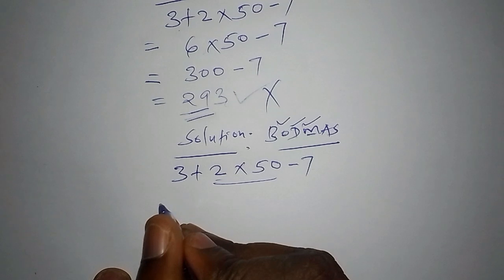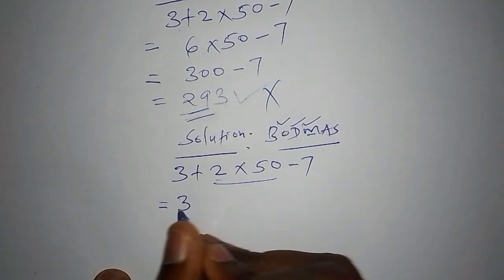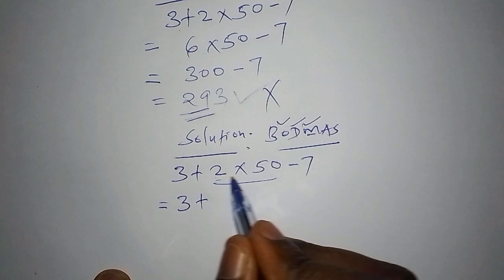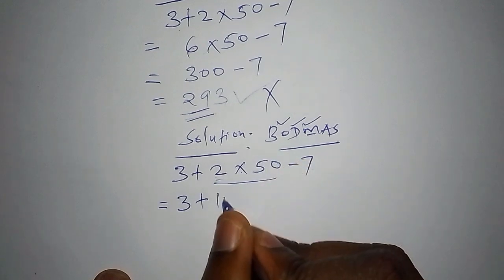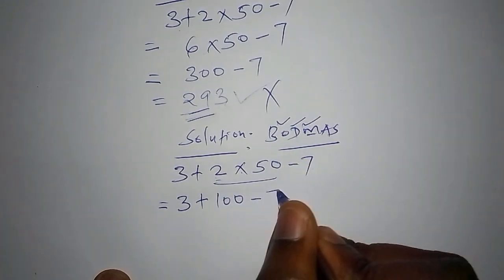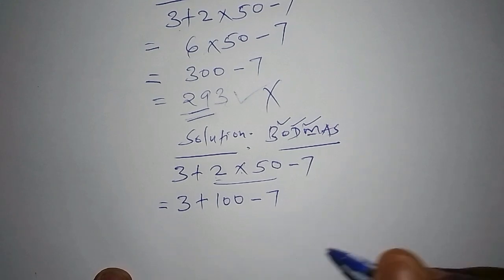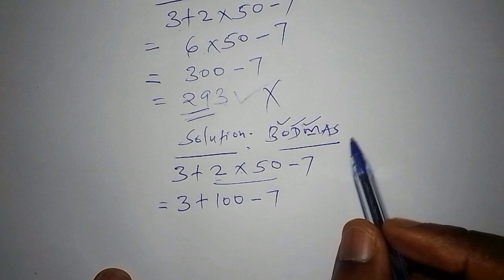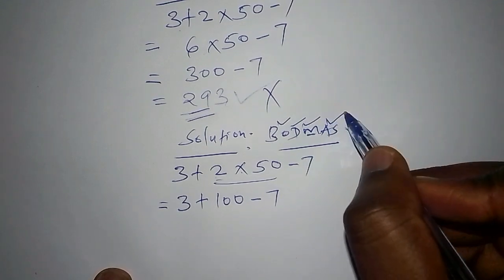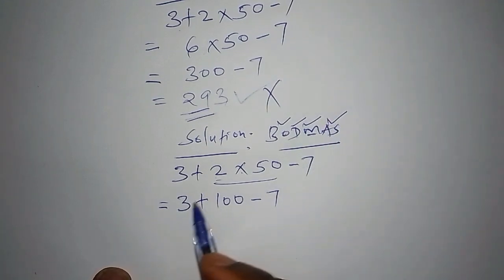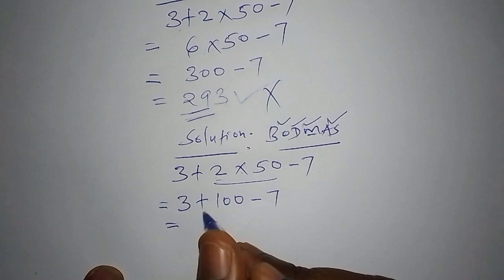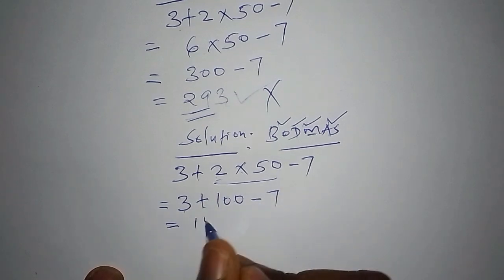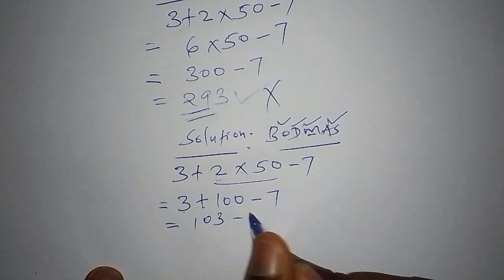So here we shall say that this one equals 3, then add to, then we should work out this operation. That is 2 multiply by 50. Well, now we shall have 100 subtract 7. So the next step that you need to work out, we need now to work out the addition sign, this sign for A. And in our addition sign, we now have 3 add to 100, and our answer is 103. Then now we subtract 7.